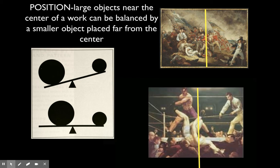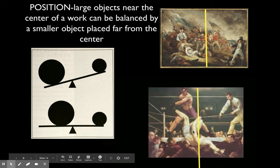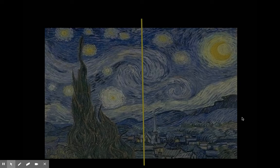Position is also important — where you place objects has a lot to do with their visual weight. Large objects near the center can be balanced by a small object placed far from the center. Think of a teeter-totter: a big kid far from the fulcrum outweighs a small kid, but if the big kid moves closer to the middle, it balances out. This same principle applies visually — in the boxing painting, two heavy figures in the middle-left are balanced by a single figure placed on the far right.